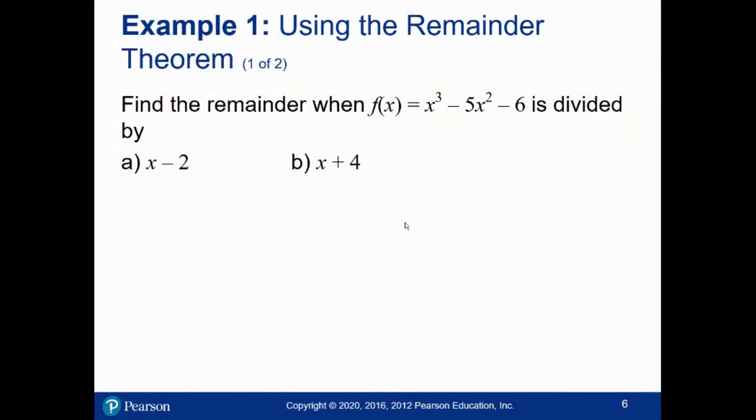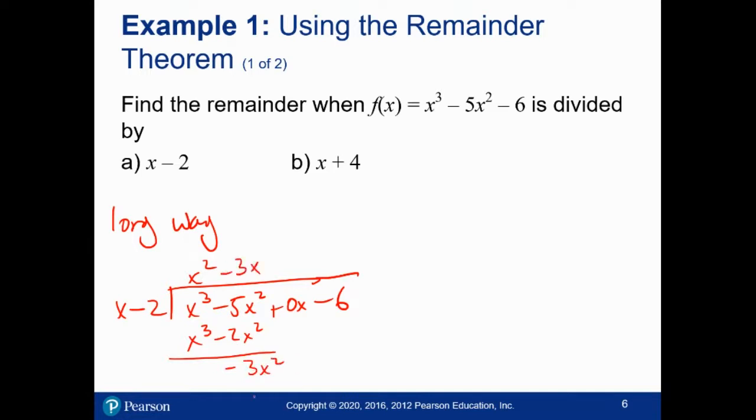So find the remainder when x cubed minus 5x squared minus 6 is divided by the following. Here's the long way to do it. Let's do x minus 2 divided into x cubed minus 5x squared plus 0x minus 6. I do the division. I need an x squared. I get x cubed minus 2x squared. I do the subtraction. We have negative 3x squared. So now I need a minus 3x giving me minus 3x squared plus 6x. I do the subtraction. We get a negative 6x. So now I need a minus 6. I had negative 6x minus 6. And now I do that multiplication. We get minus 6x plus 12. I do the subtraction. We get minus 18. So the remainder is minus 18.